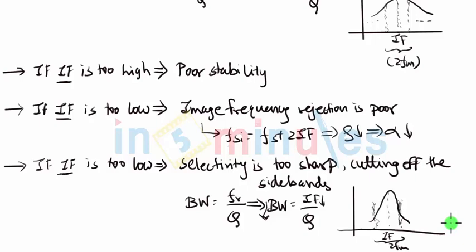Now these are some of the important factors. Apart from this, there are few more reasons which affect the choice of IF. For example, if the value of IF is very high, then we face problems during the tracking. There are tracking difficulties when IF is very large.